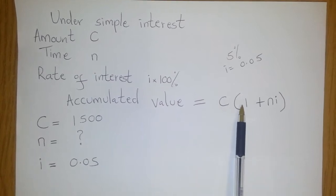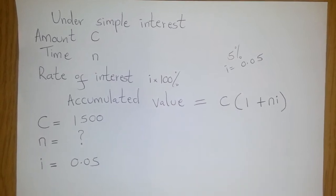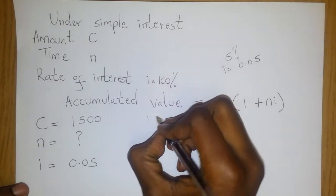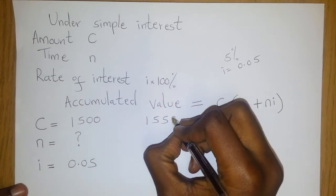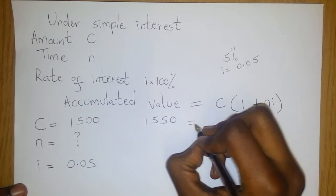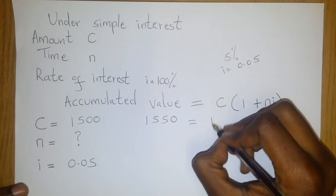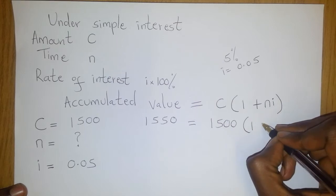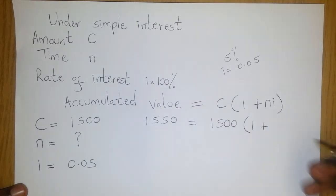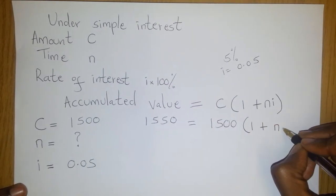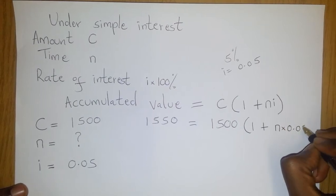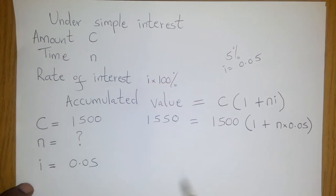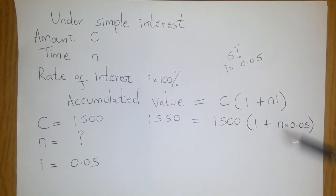So if we have the accumulated value here, if we write it down as 1550, it should be given by C, which is 1500, multiplied by 1 plus n times 0.05. We do not know what n is, so we leave it as n times 0.05. So we can use this to work out what n is.